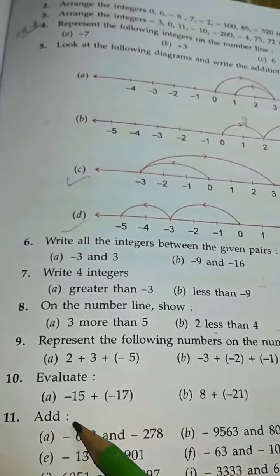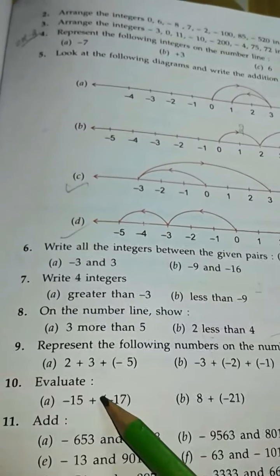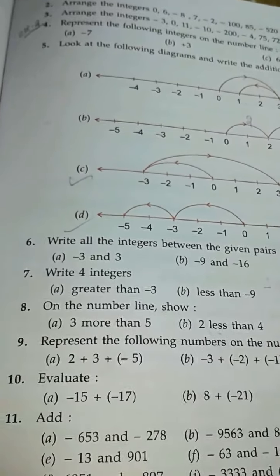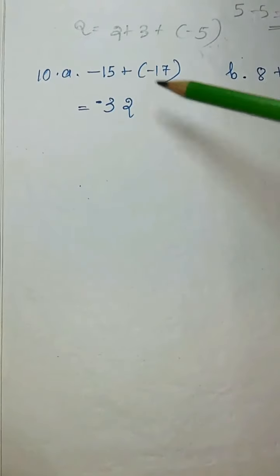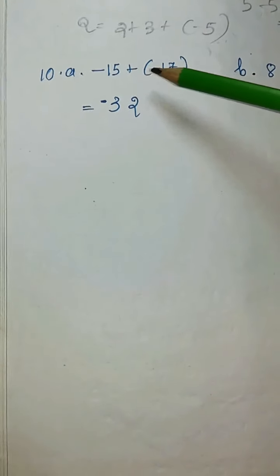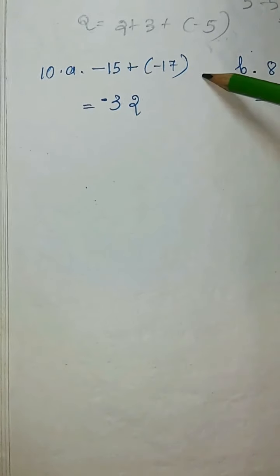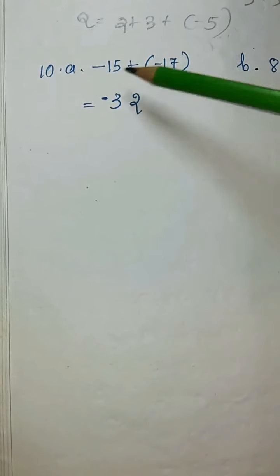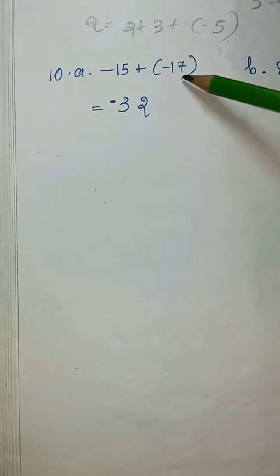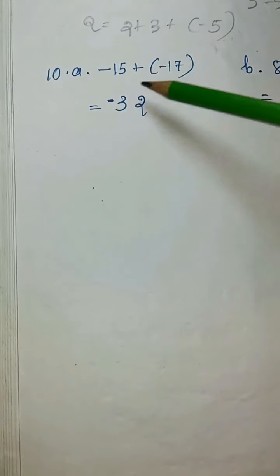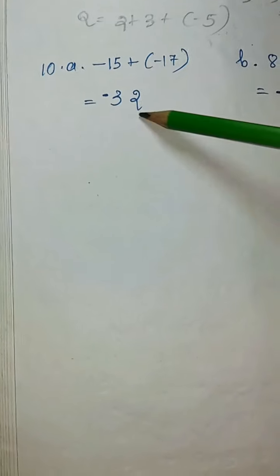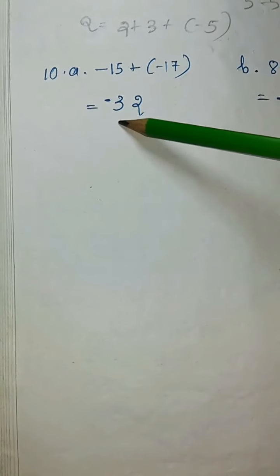Then comes to question 10: evaluate. Let's see the solution. This is the question: minus 15 plus minus 17 in brackets. Here children, both integers have minus symbol. So here you just add and put one minus symbol. So 15 plus 17 equal to 32, and here you put one minus symbol.